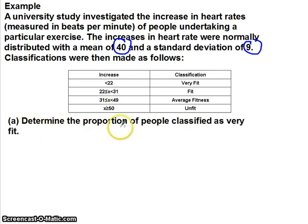Determine the proportion of people classified as very fit. We're looking for people whose increase was less than 22. It's normally distributed, so the first thing we're going to do is write a model down. X is modeled by normal distribution, mean 40 and standard deviation of 9, so 9 squared because we put the variance there.